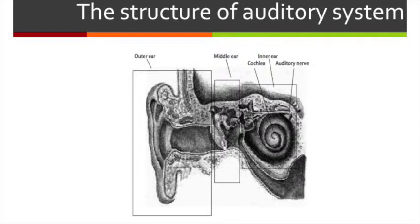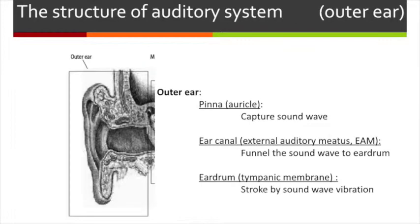The auditory system consists of three main structures: outer ear, middle ear, and inner ear. The outer ear has the pinna, ear canal, and eardrum. The pinna generally protrudes to make it easier to capture sound waves. These captured waves are then transmitted by the pinna down the ear canal and strike the eardrum.